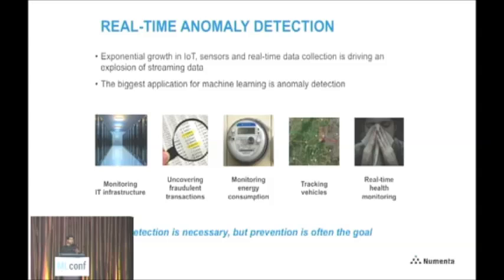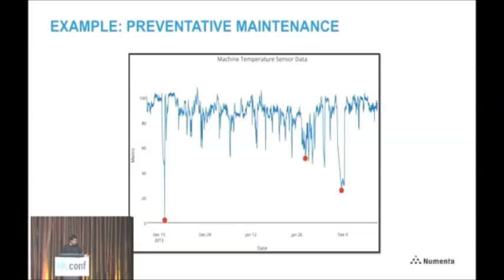It's much more valuable to know that you're going to have a heart attack in three minutes than to be told you're having a heart attack right now. That little bit of difference makes a big difference. So let's look at an example — a preventative maintenance scenario. This is a very large industrial machine in some remote location, and this is the temperature of one of their sensors.